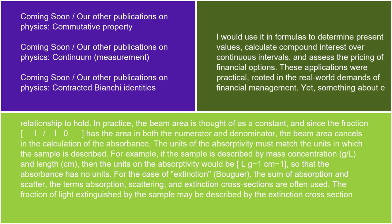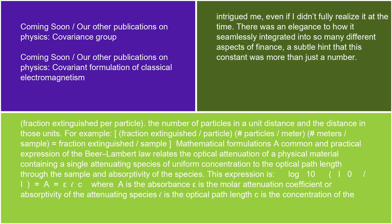The fraction of light extinguished by the sample may be described by the extinction cross-section: fraction extinguished per particle, multiplied by number of particles per meter, multiplied by number of meters per sample, equals fraction extinguished per sample.